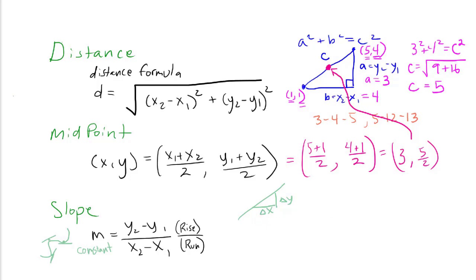What would the slope be for the two points 5, 4 and 1, 1? It's going to be y2 minus y1 over x2 minus x1, which is 4 minus 1 divided by 5 minus 1. That slope becomes 3 fourths. The correct slope between the points (1, 1) and (5, 4) is 3/4.